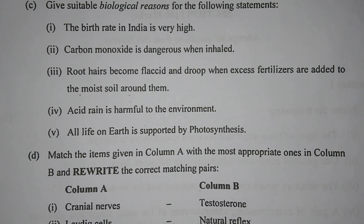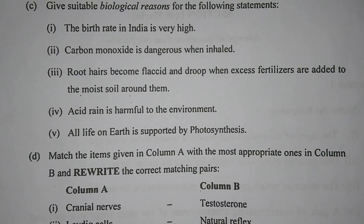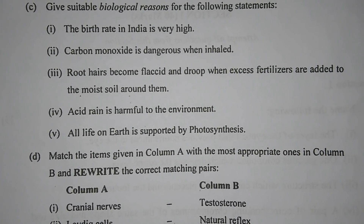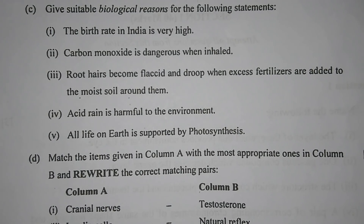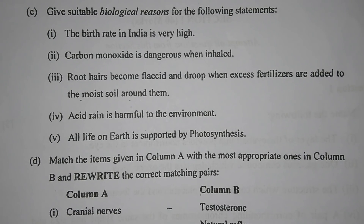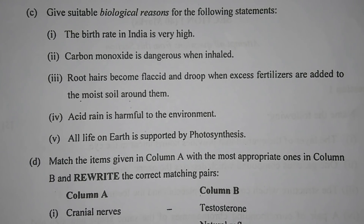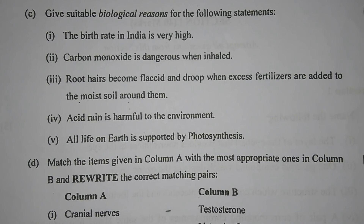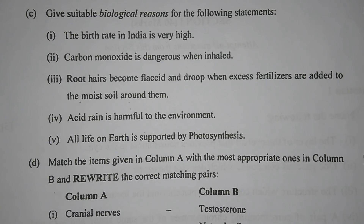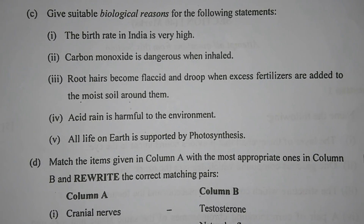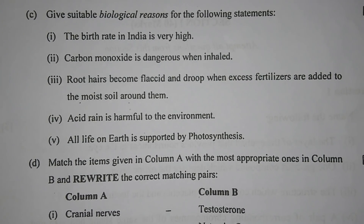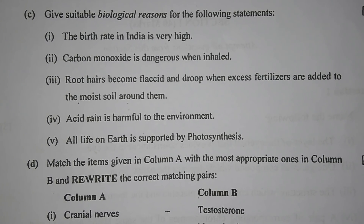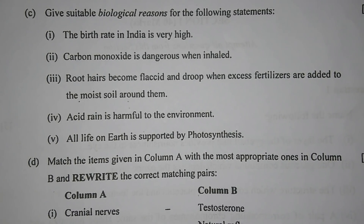Number 3 — root hairs become flaccid and droop when excess fertilizers are added to the moist soil around them. The reason is the soil becomes highly concentrated, resulting in the outward movement of water from the root hair to the soil. Number 4 — acid rain is harmful to the environment because it changes the pH of both terrestrial and aquatic ecosystems, putting a huge risk on their survival.